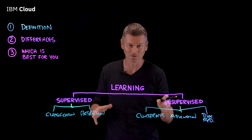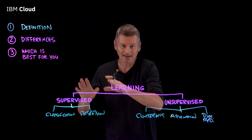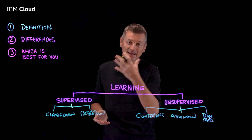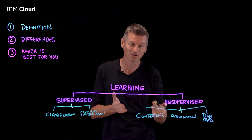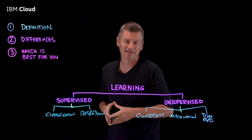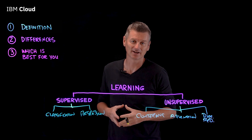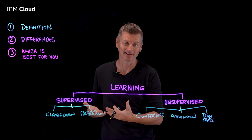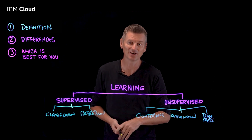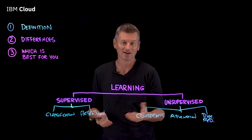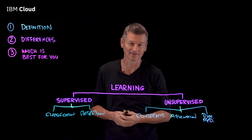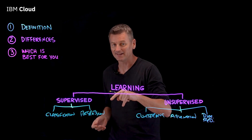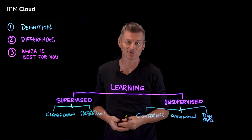Let's talk about the differences between these two types of learning. In supervised learning, the algorithm learns from training data sets by iteratively making predictions on the data and then adjusting for the correct answer. While supervised learning models tend to be more accurate, they do require upfront human intervention to label the data appropriately. For example, a supervised model can predict how long your commute will be based on time of day and weather conditions, but first you have to train it to know things like rainy weather extends driving time.